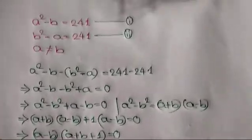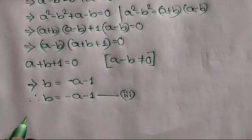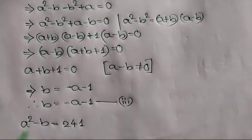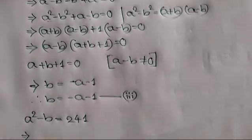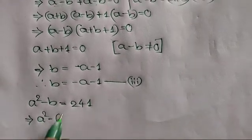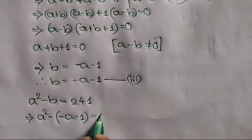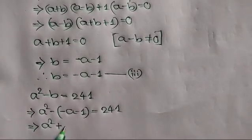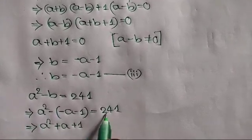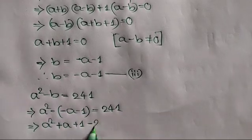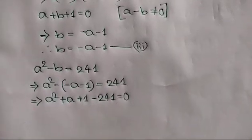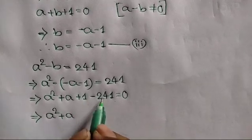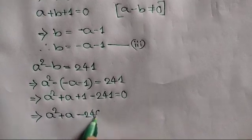Now from equation number 1, we can write A squared minus B is equal to 241. Substituting the value of B, we get A squared minus bracket negative A minus 1 is equal to 241, which gives A squared plus A plus 1 equal to 241. Taking 241 to the left side, we get A squared plus A plus 1 minus 241 is equal to 0, or A squared plus A minus 240 is equal to 0.